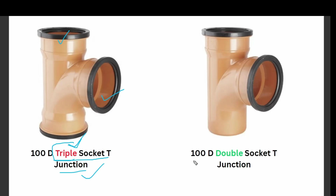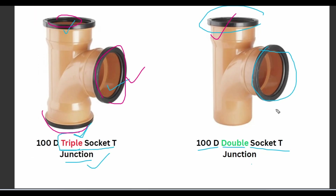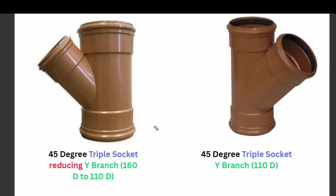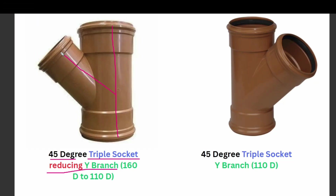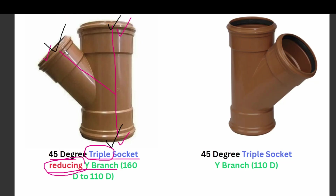The second one is a 100mm diameter double socket T-junction — there are only two ways to fix it, compared to triple which has three. You should know the real names of fittings. Next is a 45-degree triple socket reducing Y-branch. Triple socket means three ways to fix the pipe. Reducing means there are different diameters involved — for example 160mm diameter on one side and 100mm diameter on another.